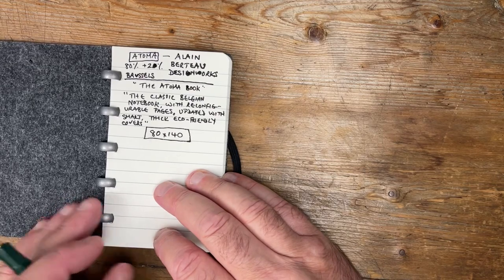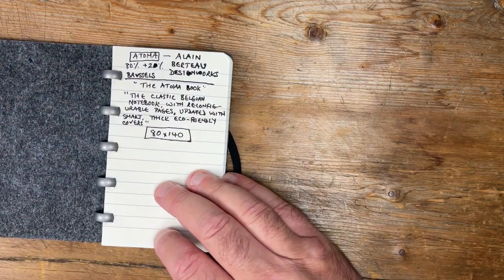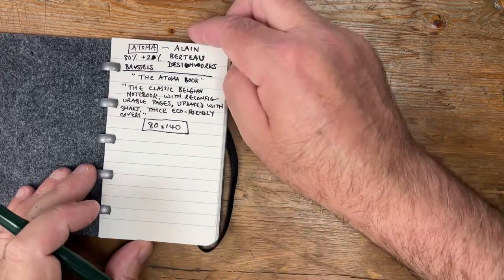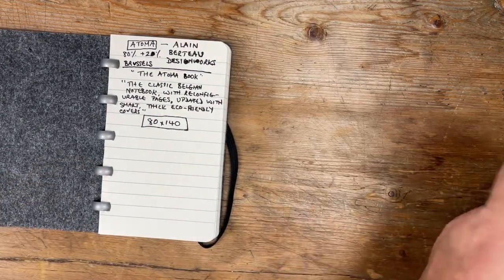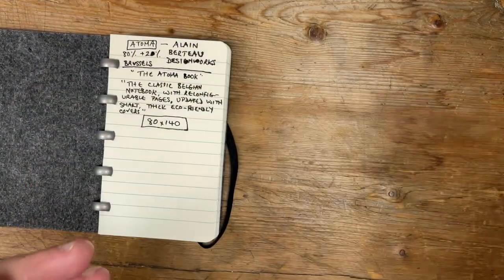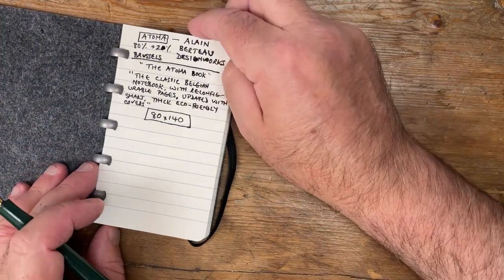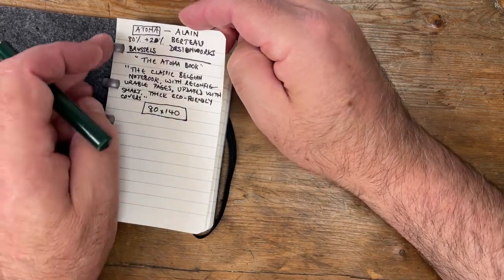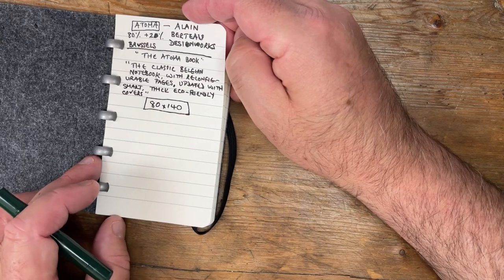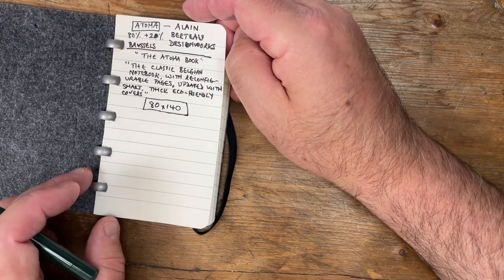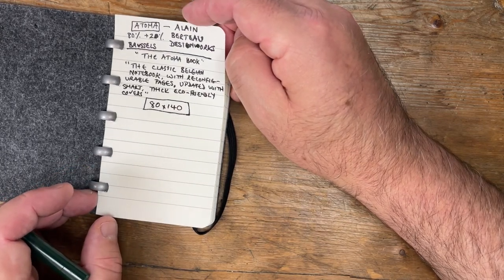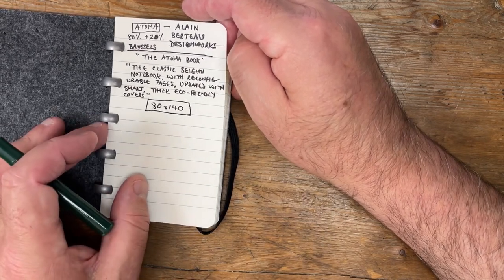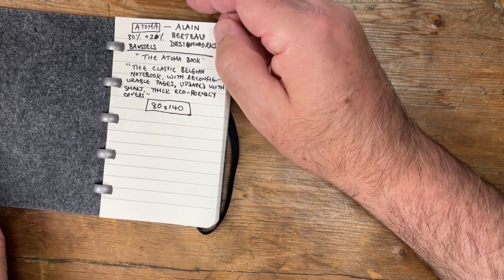And I'd rather have a bit of feathering than bleed through. So it's actually passed the bleed through test, more or less. I feel confident that I could turn over, and I will do, and write on this page, and it's not going to be too illegible, as it were. So this is a test of this pen, and this, or specifically this paper.